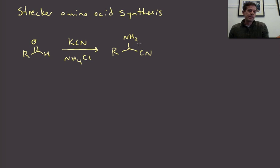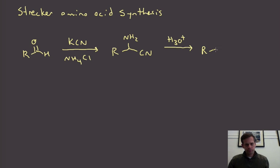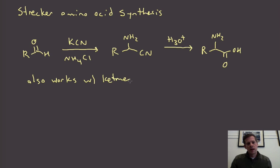This will actually convert us to a product that looks a lot like the cyanohydrin except in this case instead of a hydroxy we have an amine. What we can then do to this product is that same hydrolysis that we just talked about that hydrolyzes the nitrile to the carboxylic acid. There we go, we have an amino acid, an amine right next to a carboxylic acid.